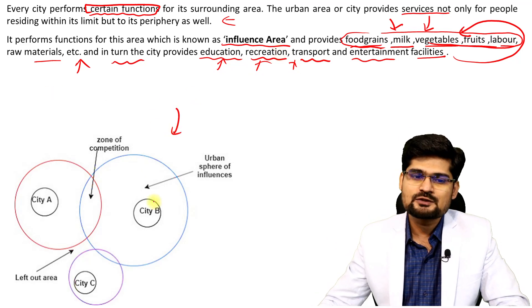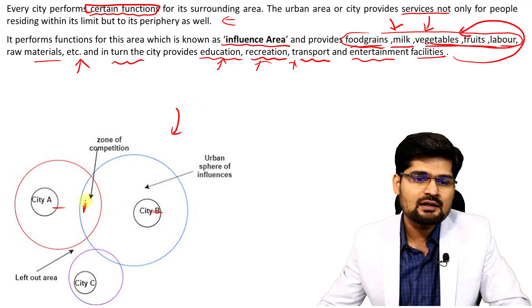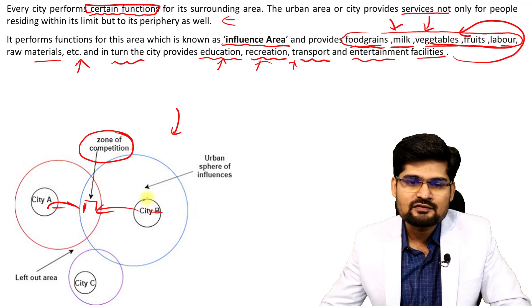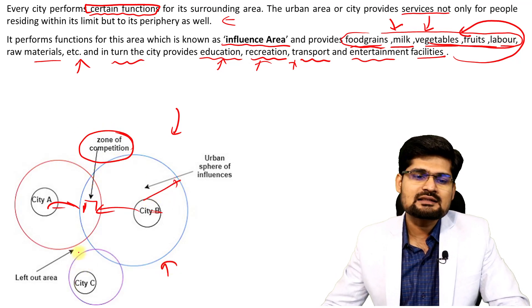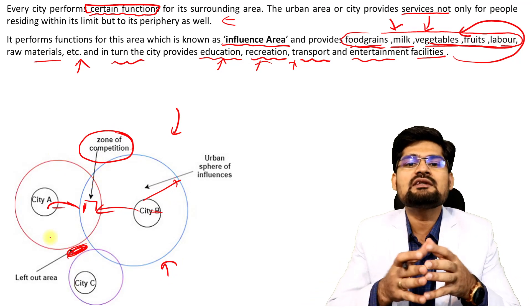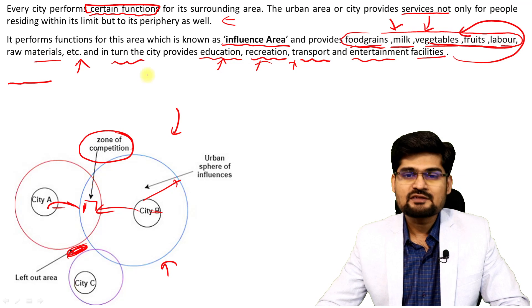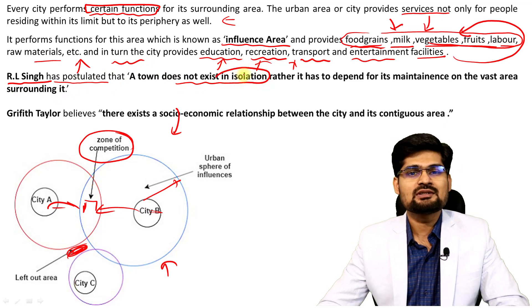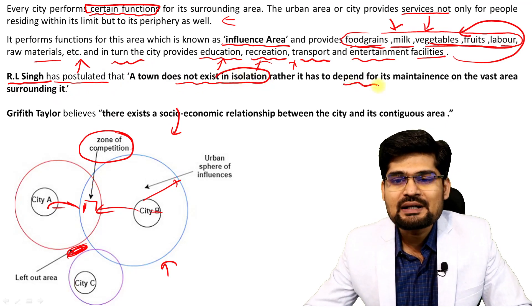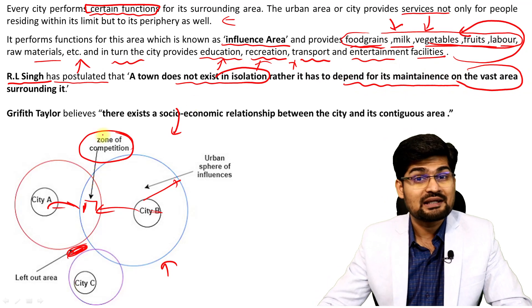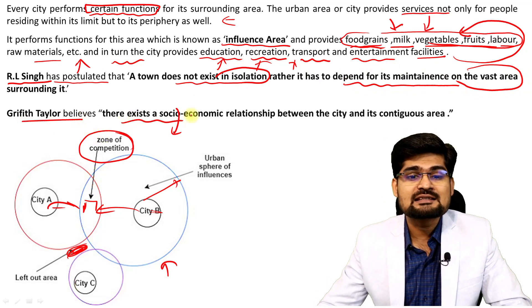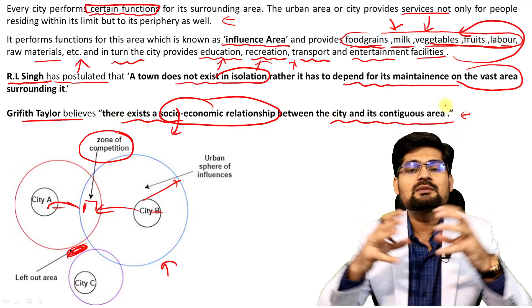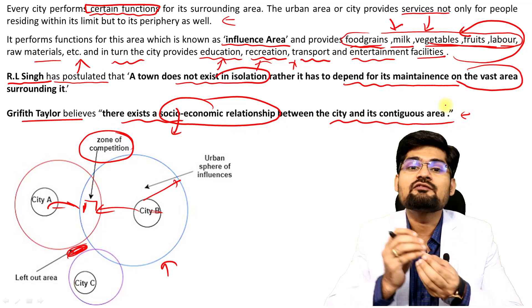This inflow-outflow network can be understood through a diagram. If you observe cities A and B, there is an overlap area where services of both A and B are available — this is also called the zone of competition. There are also certain areas not served by any of these cities. Professor R.L. Singh postulated that a town does not exist in isolation; it is dependent on the vast area surrounding it. Griffith Taylor also believes there exists a socio-economic relationship between the city and its contiguous area.